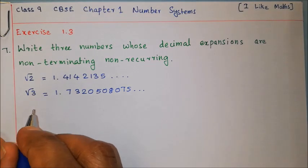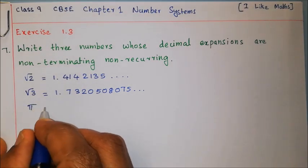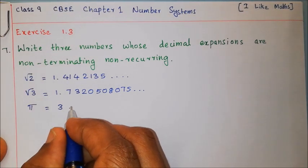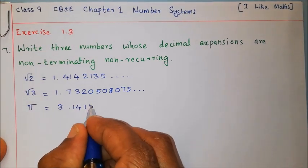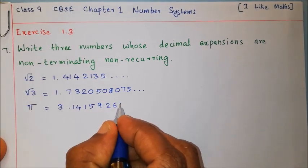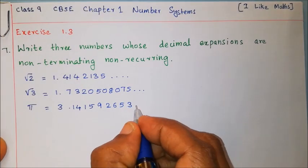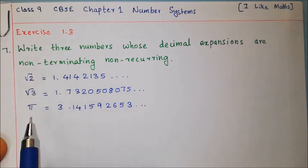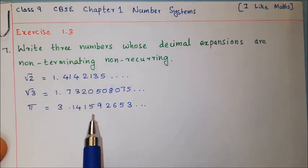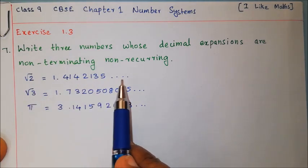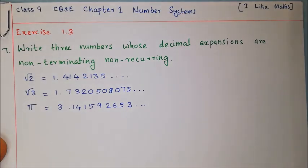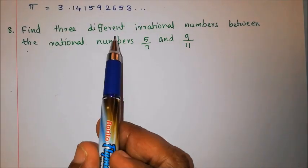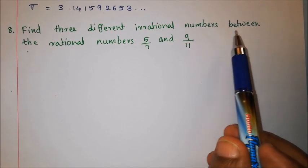Root 3 equals 1.7320508075... and it is non-terminating and non-recurring. These three numbers — root 2, root 3, and a third irrational number — all have non-terminating, non-recurring decimal expansions. That completes question 3 numbers.